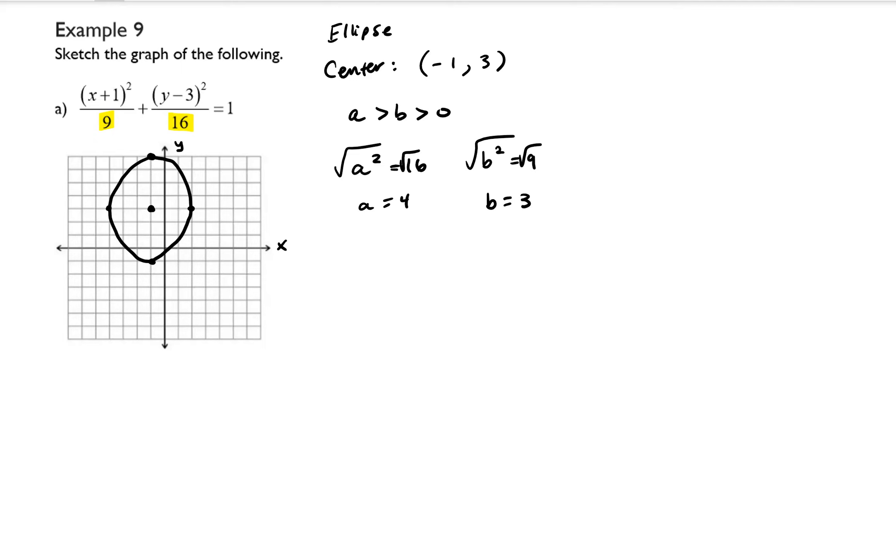Now that's all it said to do in the question. It just wanted us to sketch the graph. But let's say we also wanted to locate the foci. The foci are going to be located at the same x value of the center. So it's going to be -1, comma, plus or minus, sorry, the y value, which is 3, plus or minus our c value.